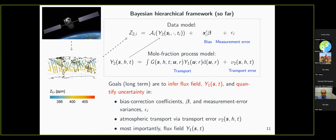The Bayesian hierarchical framework looks like this. The OCO-2 satellite gives us spatial-temporal data — hundreds of thousands of data points. Each measurement z_{t,i} is a column-averaging operator a_i applied to the mole fraction field Y₂ at some point in space and time, plus a bias term, plus random measurement error ε_i, which is normally distributed with some variance. The OCO-2 satellite reads spectra — gases like CO₂ have very clear absorption signatures in spectral space, and going from spectral space to actual PPM values is a Bayesian inversion algorithm. We take the maximum a posteriori estimates from that algorithm as our data.